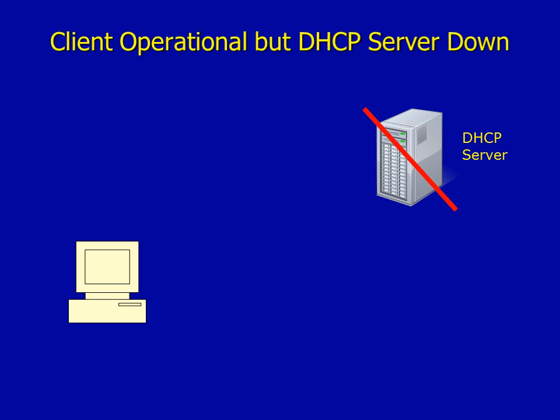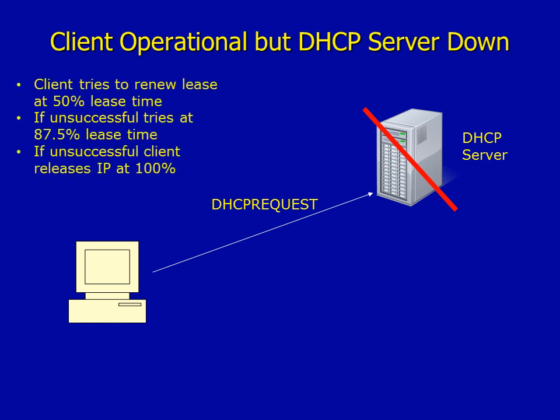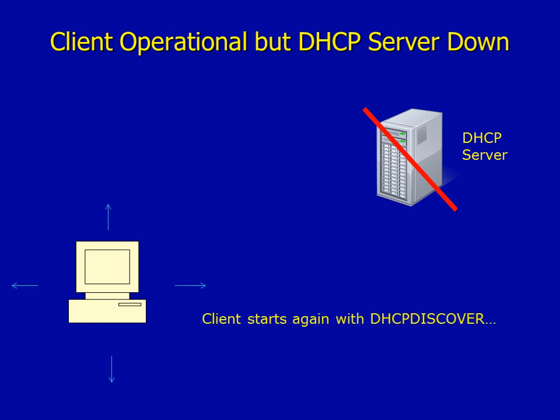Now let's look at what happens when the client is operational but the DHCP server goes down — this could be due to a pulled plug, damage, or maintenance. The client sends a unicast DHCP Request as before, but there's no response. It tries initially at T1 (50%), tries again at T2 (87.5%), and if still unsuccessful, releases its IP address at the end of the lease and starts again with a DHCP Discover.